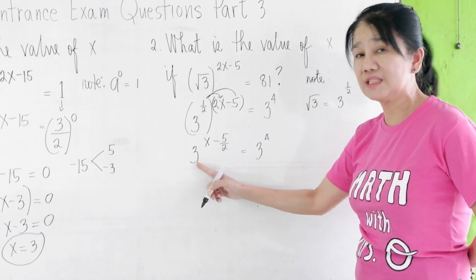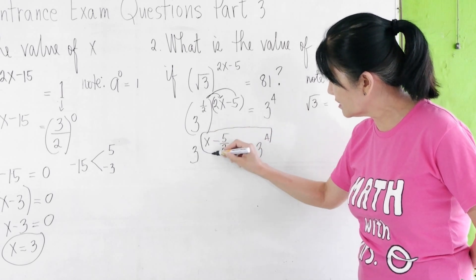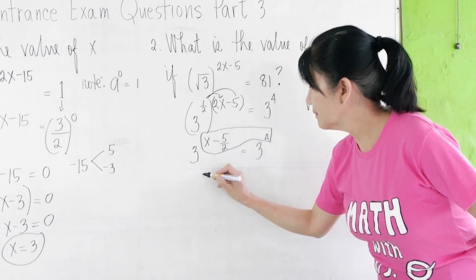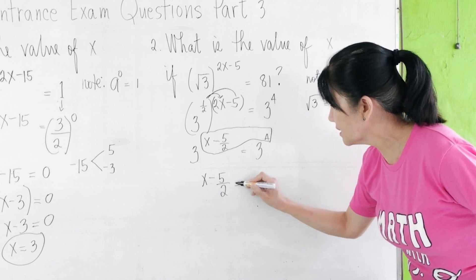The bases are now the same. So, you can now equate this. x - 5/2 = 4.